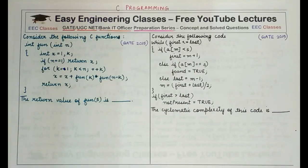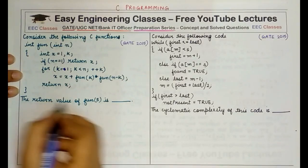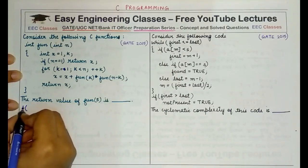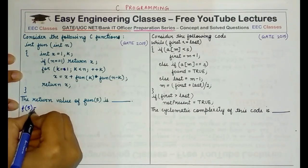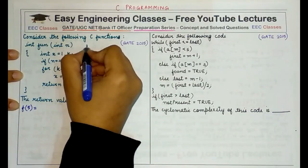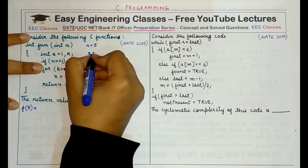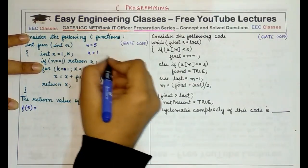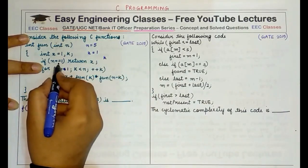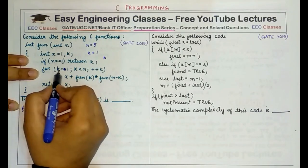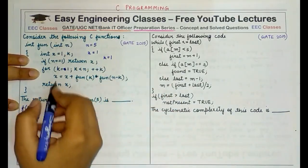It's a recursive function and you have to find out what would be the final value returned when this function is called with parameter 5. When fun(5) is called — using shorthand f for fun — f(5) assigns n equal to 5, x is initialized to 1. Since n equals 5, not 1, we enter the for loop with k initialized to 1, and 1 is less than 5.